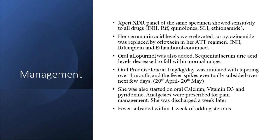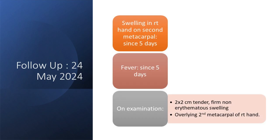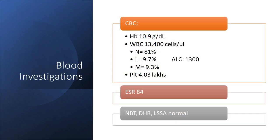She was started on calcium, vitamin D, and analgesics, and within a week of starting steroids her fever subsided. In May she returned with a swelling over the right hand at the second metacarpal, again running fever for five days — TB dactylitis had now set in. Her ESR was 84. We were suspecting immunodeficiency given these recurrent new bone lesions.